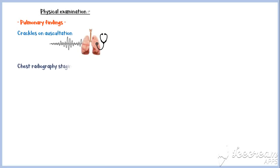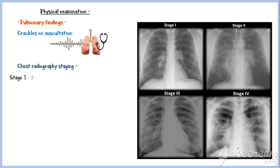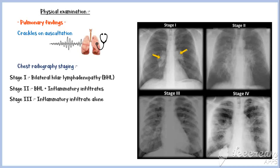The chest radiography staging system gives a clear idea of disease progression and consists of four stages. In stage 1, hilar lymphadenopathy occurs bilaterally — enlarged lymph nodes are denoted by the yellow arrows in the chest radiograph. In stage 2, there is bilateral hilar lymphadenopathy as well as inflammatory infiltrates. In stage 3, the chest radiograph shows only the inflammatory infiltrate with no identifiable lymphadenopathy. In stage 4, there is fibrosis.